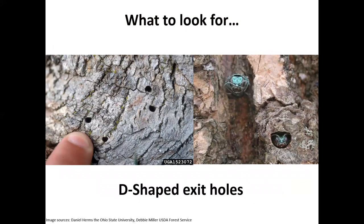Another thing to look for are D-shaped exit holes, and these are what I use primarily to see if a tree is infested. Sometimes they're bigger, sometimes they're smaller, but if you see exit holes with this particular shape, that is one of the clearest signs that emerald ash borer has been there before you actually try to damage the tree and remove the bark. This is an artifact of when the actual insect emerges from the tree, because a larva is the actual culprit who creates all the galleries. They overwinter in there — the eggs are laid within the bark and the larva is the one doing the eating. They emerge as adults, and that is after the damage has been done.